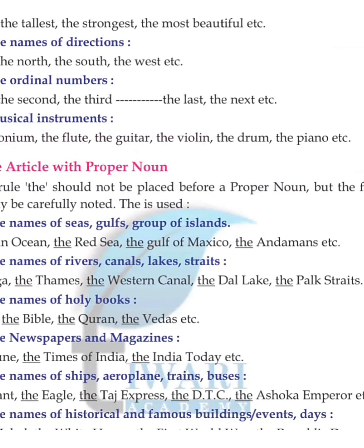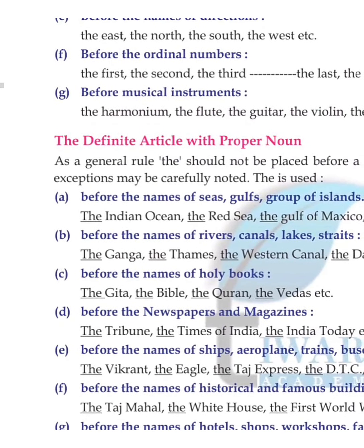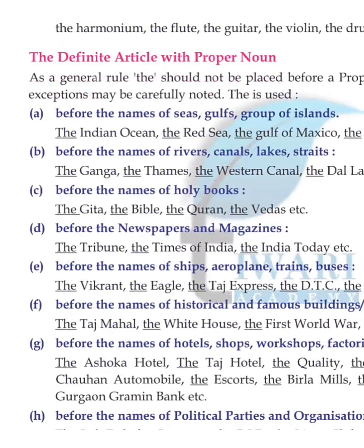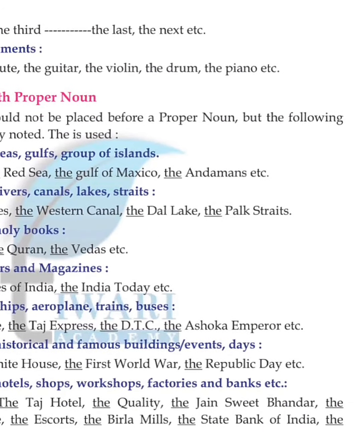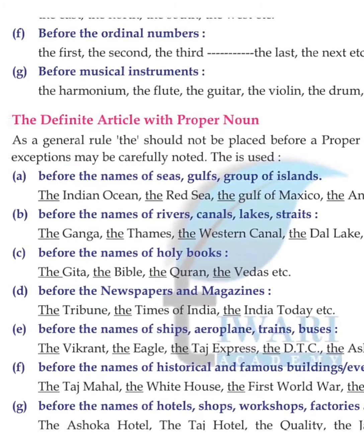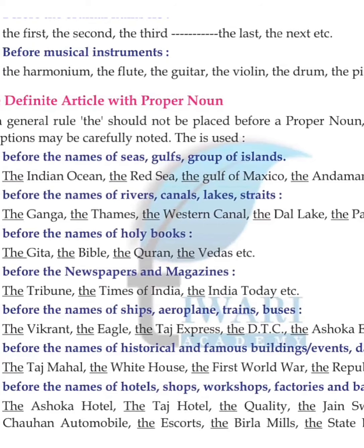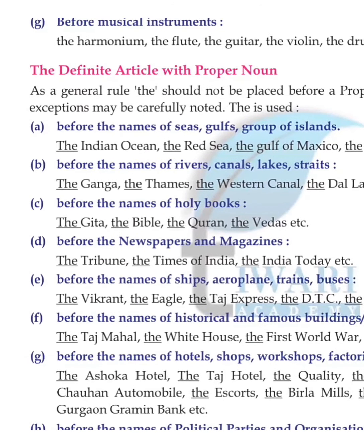'The' is used before musical instruments: the harmonium, the flute, the guitar, the violin, the drum, the piano. As a general rule, 'the' should not be placed before a proper noun, but exceptions exist. 'The' is used before names of seas and groups of islands: the Indian Ocean, the Red Sea, the Gulf of Mexico, the Andaman. Also before names of rivers, canals, and lakes: the Ganga, the Thames, the Western Canal, the Dal Lake.